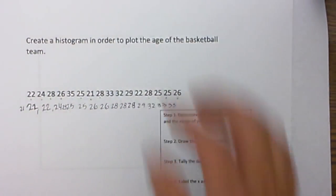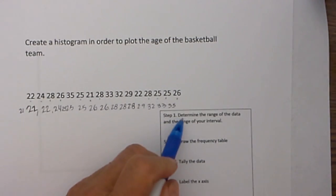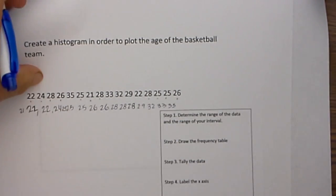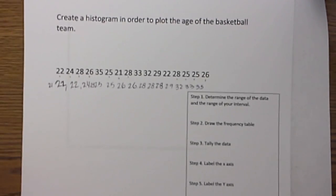Now we are going to follow these steps. We are going to determine the range, we are going to draw a frequency table, we are going to tally the data, we are going to label the x axis, label the y axis, and title the histogram.